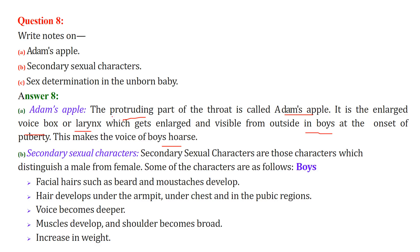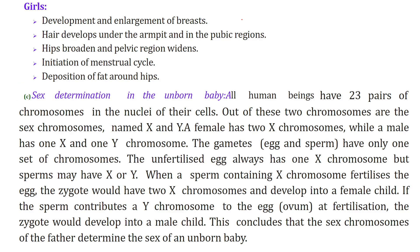Secondary sexual characters: In boys — facial hairs like beard and moustaches, hair under armpits, chest and pubic regions, voice becomes deeper, muscles develop, shoulders become broad, and weight increases. In girls — breasts are enlarged, hair develops in armpit and pubic regions, deposition of fat around hips, broadening of hips and pelvic region — because they carry the next generation — and the menstruation cycle starts.